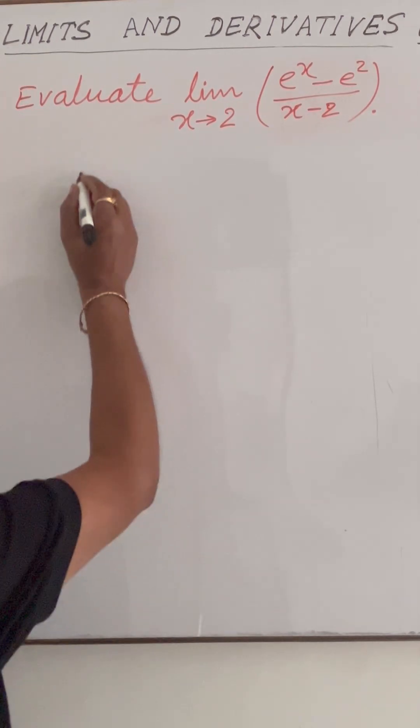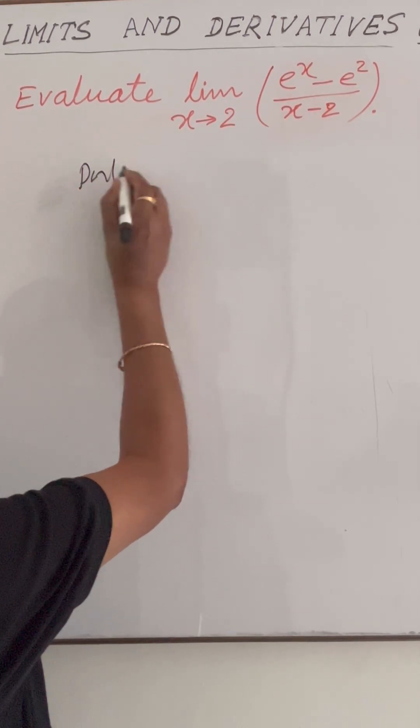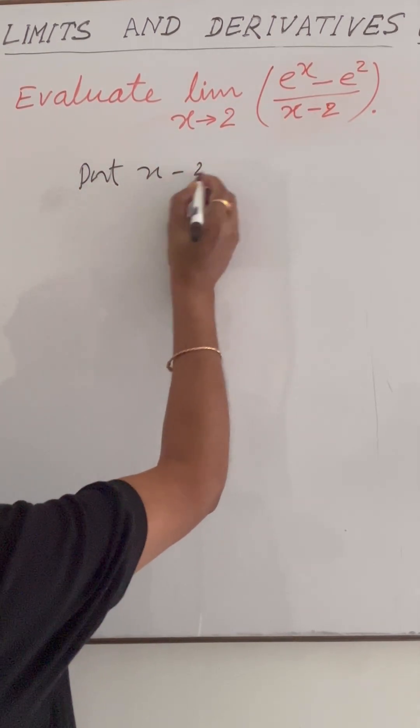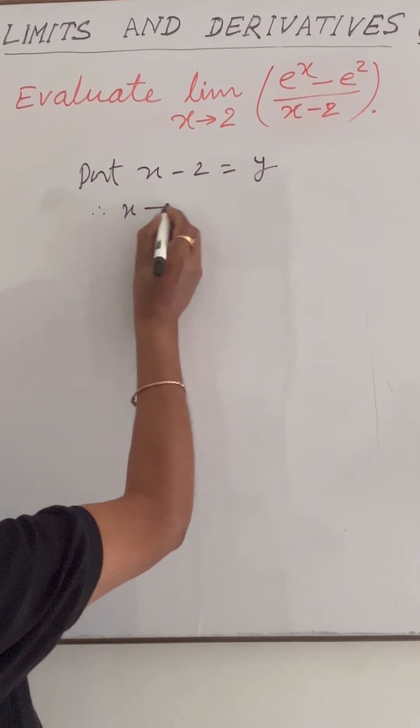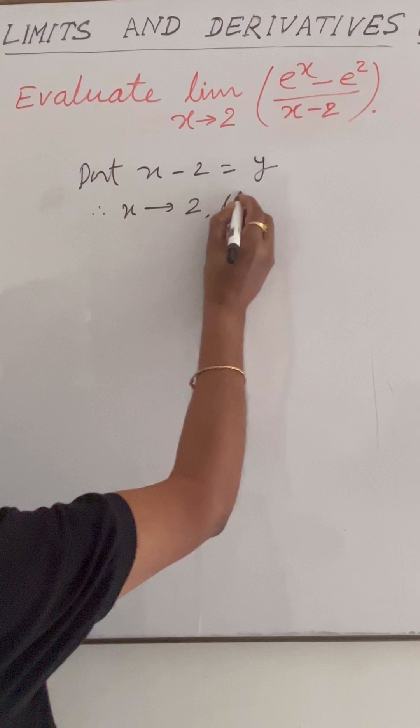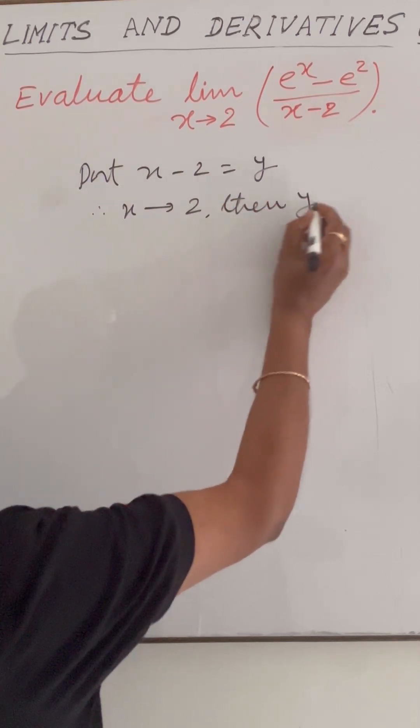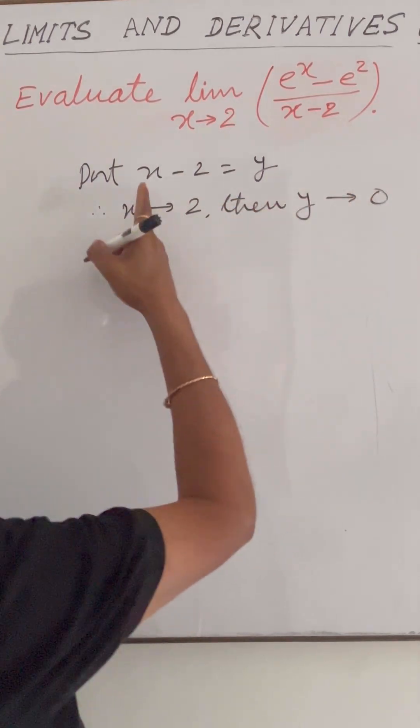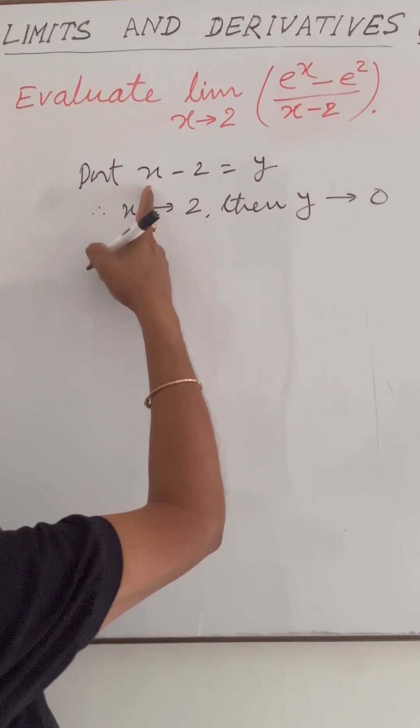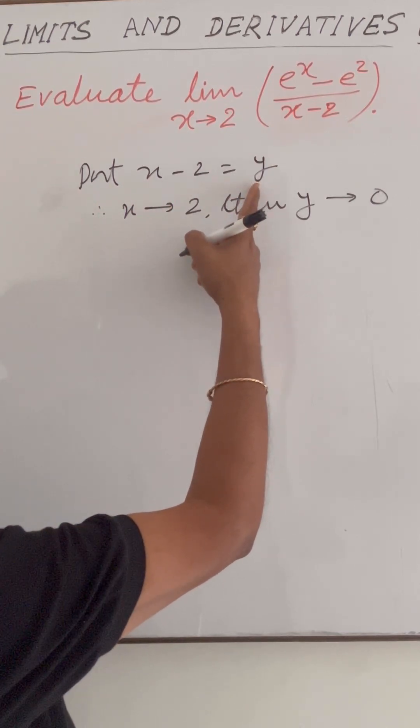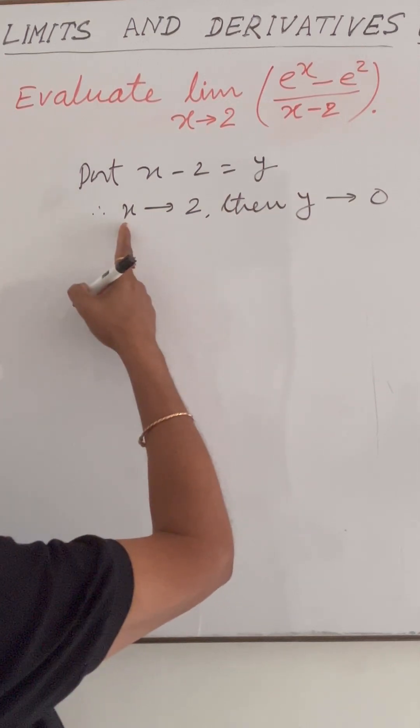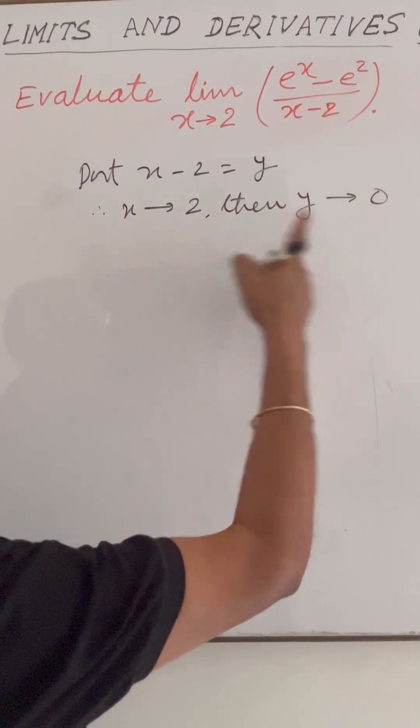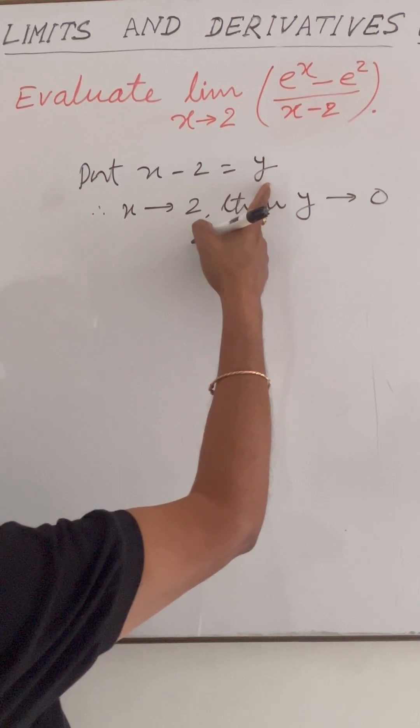Here we will put x minus 2 is equal to y. Therefore, when x tends to 2, then y tends to 0. If x is approximately equal to 2, then y is approximately equal to 2 minus 2, that is 0. So when x tends to 2, then y tends to 0, and x minus 2 is y.